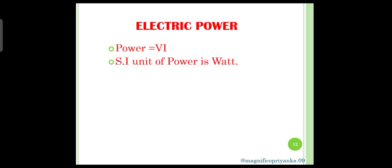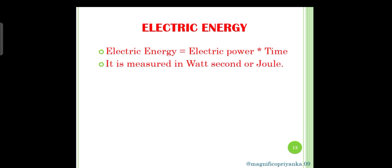Next topic is electrical power. The rate at which electric energy is consumed in an electrical circuit is known as electrical power. Next is electrical energy. It is a product of electric power and time, that is electric energy equals electric power multiplied by time.